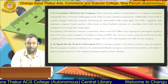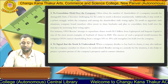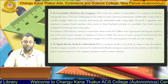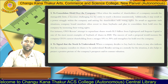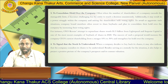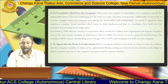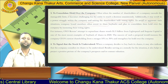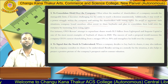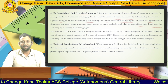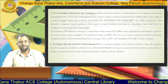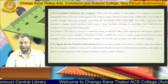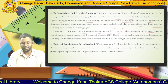Next, to consolidate hold over the company: when the number of shareholders exceeds the manageable limit, it is very challenging for the entity to reach a decision, as there are numerous shareholders. Additionally, it may result in poor decision-making and struggle among shareholders with voting rights. To avoid such situations, company board members often resort to share buyback to consolidate their hold by increasing their voting rights. For instance, Oyo Rooms attempted to repurchase shares worth Rs. 1.5 billion from Lightspeed and Sequoia Capital — one of the most recent examples of buyback in 2020.